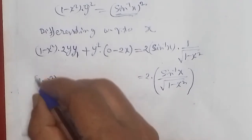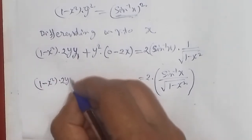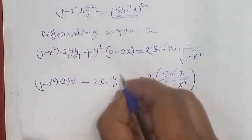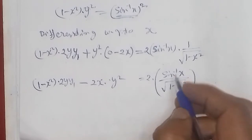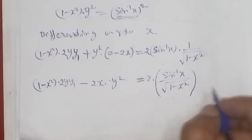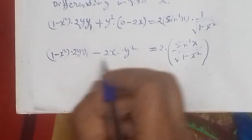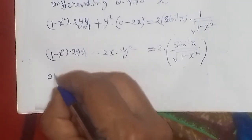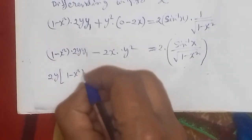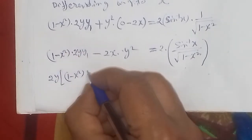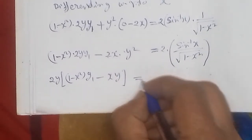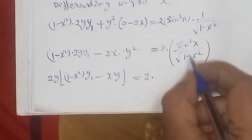So we have: (1 minus x square) times 2·y·y₁, minus 2x times y squared on the left side. On the right hand side, differentiating gives 2·y using equation 1 substitution. Taking 2y as common, we get inside the bracket: (1 minus x square)·y₁ minus x·y remaining.